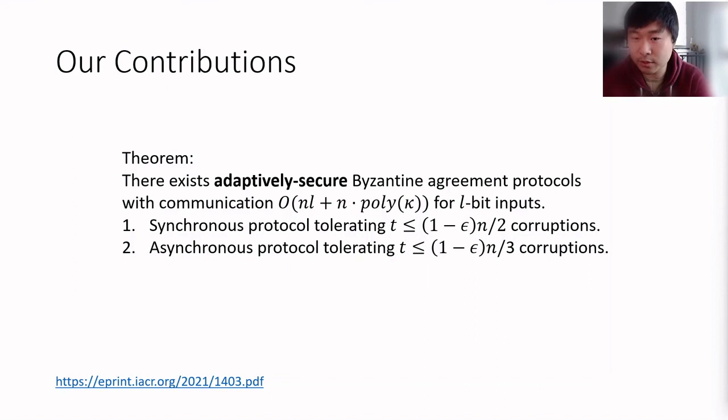And we give two protocols, or protocols in two flavors. The first protocol is a synchronous protocol that tolerates up to n over two corruptions, and the second is an asynchronous protocol that tolerates up to any fraction up to n over three corruptions.